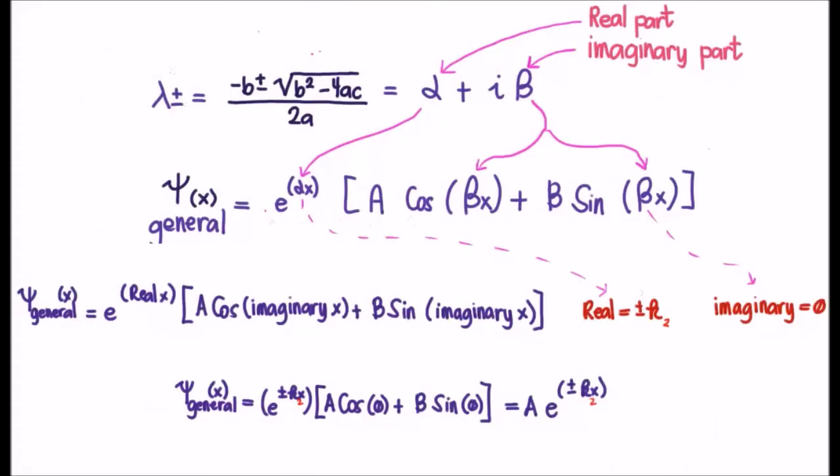Now, most generally, lambda, the solution to our characteristic equation, is a complex number. It has a real component, real part α, and an imaginary part β. It allows us to get the general solution to our differential equation, which is given by this expression here.